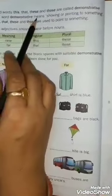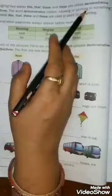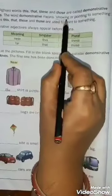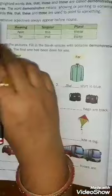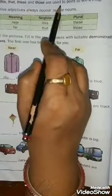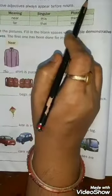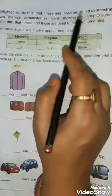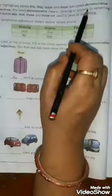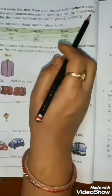The word 'demonstrative' means showing or pointing to something. The words this, that, these, and those are used to point out to something. Demonstrative adjectives point out something. So this, that, these, and those are called demonstrative adjectives.